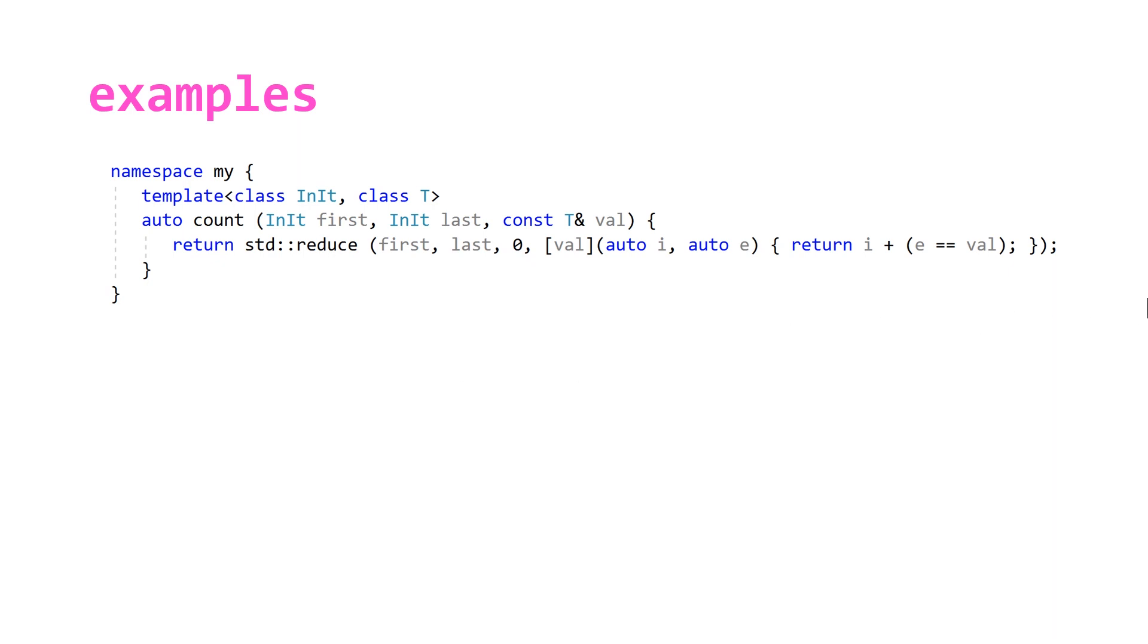We can run the same code that we had in our first example except just calling a different version of count the one in the my namespace and it's going to return the exact same answers that we saw the first time we saw this code.